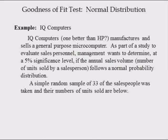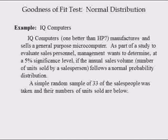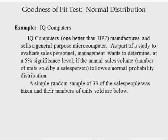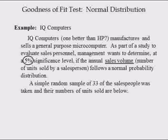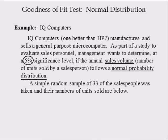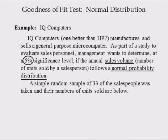In the following example, IQ Computers manufactures and sells general purpose microcomputers. As part of a study to evaluate sales personnel, management wants to determine at a 5% significance level if annual sales volume — number of units sold by salespeople — follows a normal probability distribution. A simple random sample of 33 salespeople was taken, and their numbers of units sold are given below.